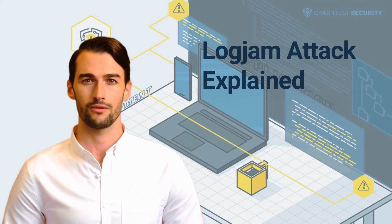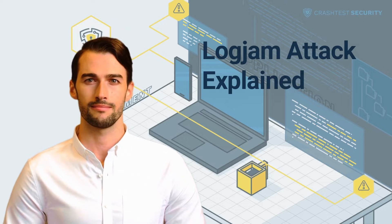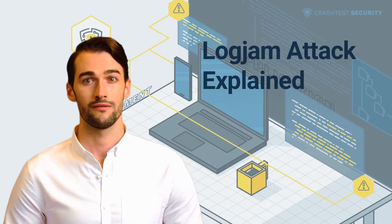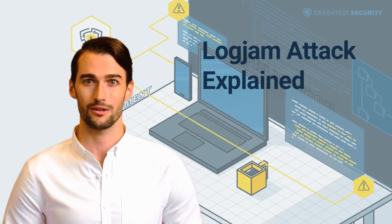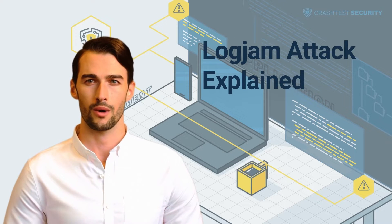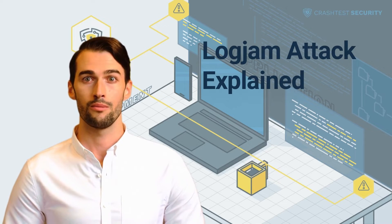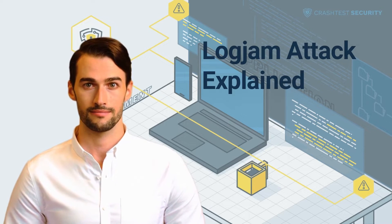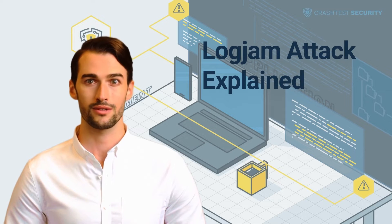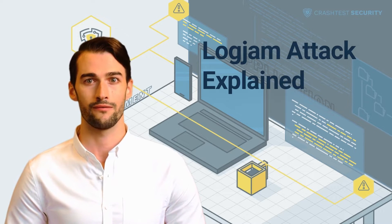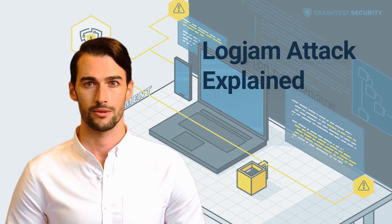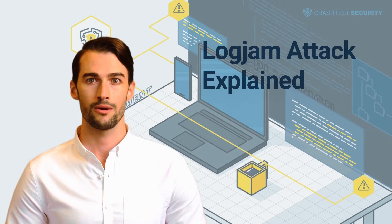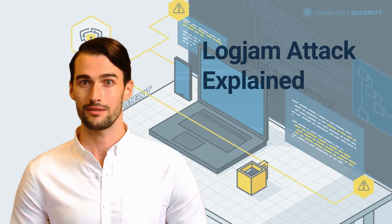Until the official discovery of the threat, computer researchers had known that the 512-bit Diffie-Hellman was not strong enough for modern encryption needs. They have been aware of the potential weaknesses since 1992. However, the seriousness of the vulnerability was not fully recognized until 2015, when a large group of scientists demonstrated different ways in which the Logjam vulnerability can be used for malicious purposes.